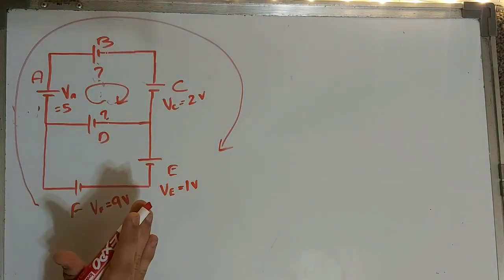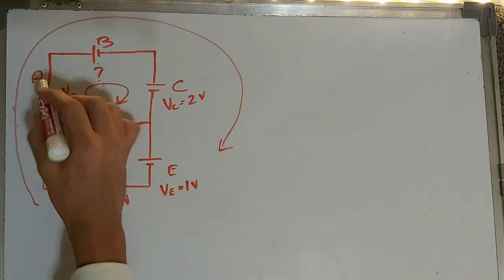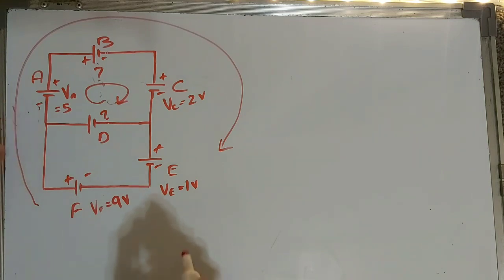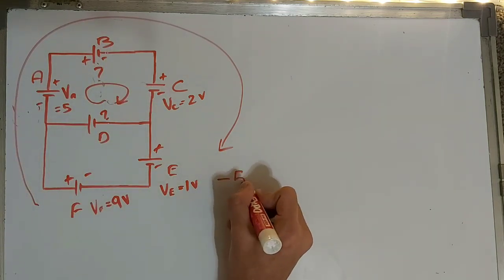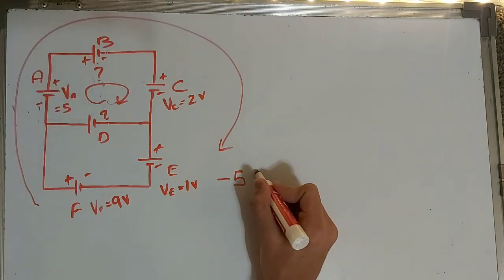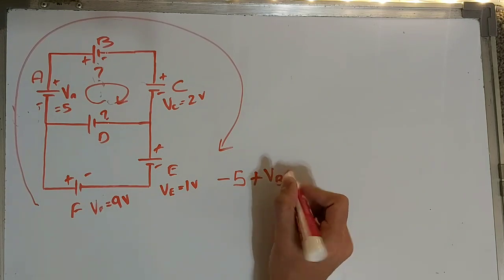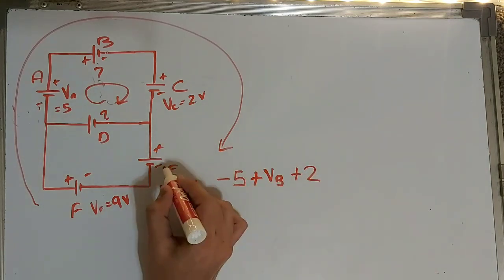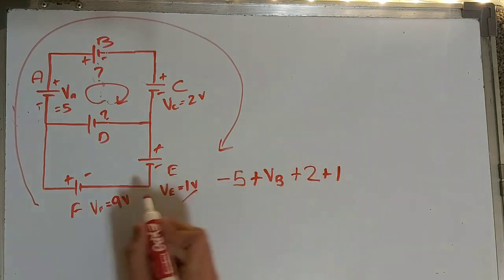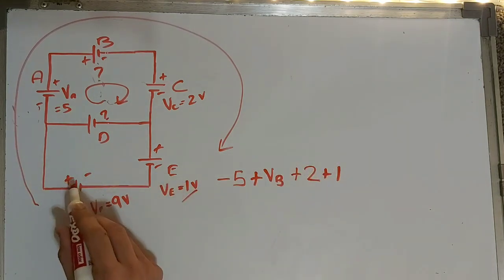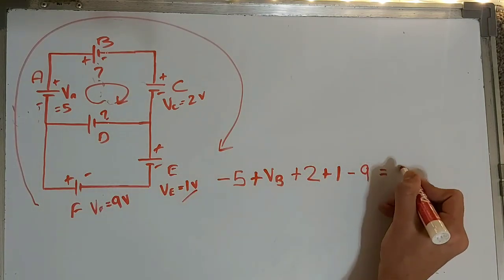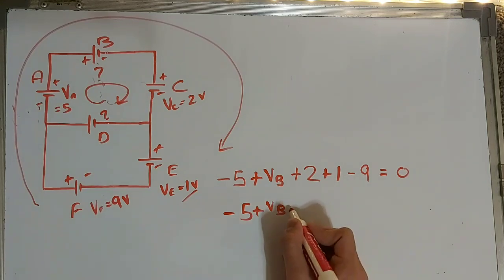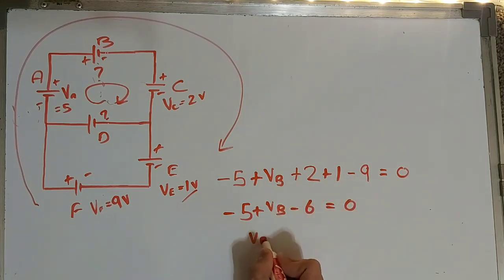The sum of voltages should equal zero. Starting from A — it's going from negative to positive, so minus five. VB is unknown but going from positive to negative, so plus VB. C is going from positive to negative, so plus two. E is going from positive to negative, one volt, so plus one. F is going from negative to positive, so minus nine, equal to zero. So minus five plus VB plus three minus nine equals zero, giving VB equals 15.